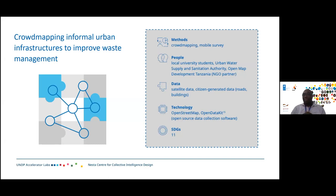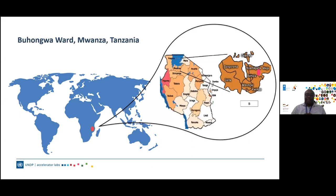This work was designed to respond to Sustainable Development Goal 11, which focuses on making cities inclusive, safe, resilient, and sustainable. We are bringing you this story from a place called Buhongwa, which is a ward in Ilemela District in Mwanza City, located on the shores of Lake Victoria in northern Tanzania, in east Africa.